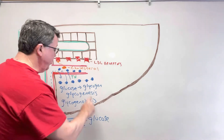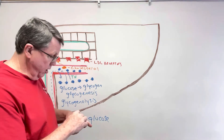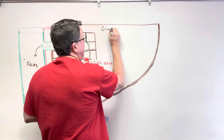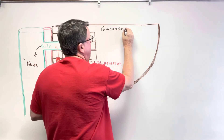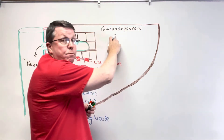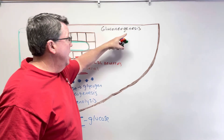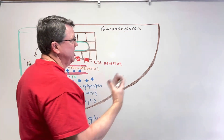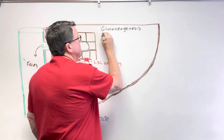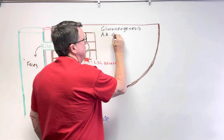The other thing that happens is when we don't have enough glycogen, thyroid hormone plays a role in something called gluconeogenesis. Gluconeogenesis is the making of glucose from non-sugar substances — non-sugar precursors. It uses amino acids and glycerol.